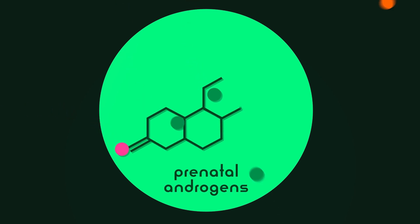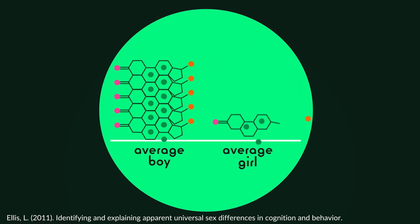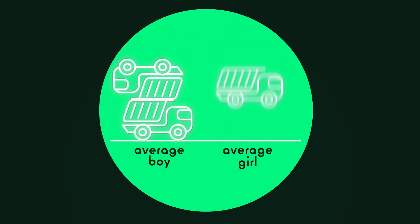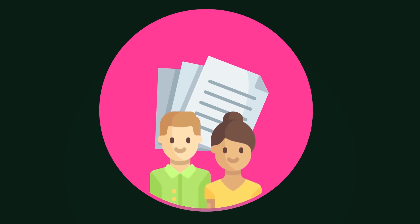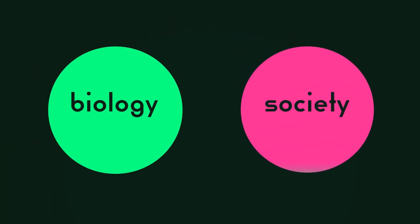Take toy preferences, for example. Boys tend to be more interested than girls in toys that move. This gender difference has both biological and sociological components that are often hard to separate. Biologically, strong evidence suggests that prenatal androgens play a role in the hyperdevelopment of the brain's visio-spatial system. Since boys are often exposed to much more prenatal androgens than girls, more boys show an interest in moving objects. And yet, sociologically, there is also strong evidence that parents play a large role in influencing their child's toy preferences. So, to understand how biology and society affect gender differences requires an integration of many variables.